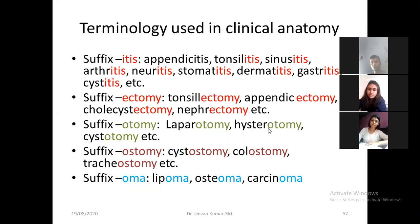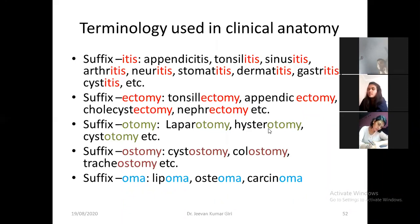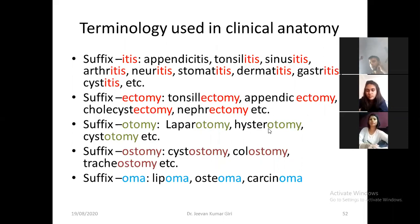Hysterotomy — opening of the uterine cavity and then closing it by stitching or suturing. Then cystotomy — you are going to open the urinary bladder and after completion of the procedure, close it. So opening and closing the hollow organ, that is '-otomy'. The suffix '-otomy' denotes the opening and closing of the hollow organ. '-Ectomy' means completely removed from the body — you will not put it back again.